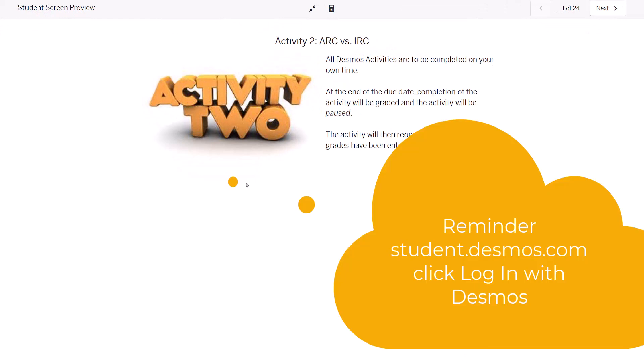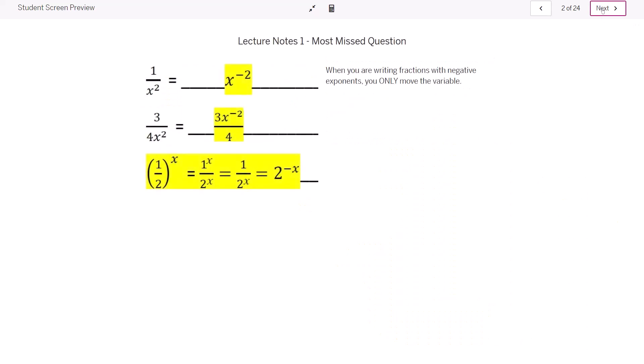Okay, I'm going to walk you through Desmo's Activity 2 a little bit just to give you some hints. The first part you will see I tend to talk with the TA and see what gets missed the most. I will say that a lot of times students want to bring that 4 up, but you could actually separate it as 3 fourths times 1 over x squared. So just be careful with that.